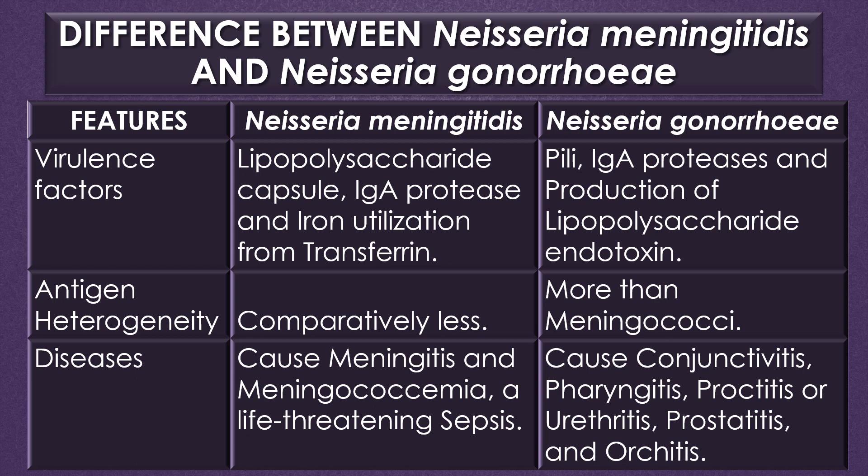Antigen heterogenicity is comparatively less in Neisseria meningitidis but more in Neisseria gonorrhoeae. Some diseases caused by Neisseria meningitidis are meningitis and meningococcemia, which is a life-threatening sepsis. In Neisseria gonorrhoeae, diseases observed include conjunctivitis, pharyngitis, proctitis or urethritis, prostatitis, and orchitis.